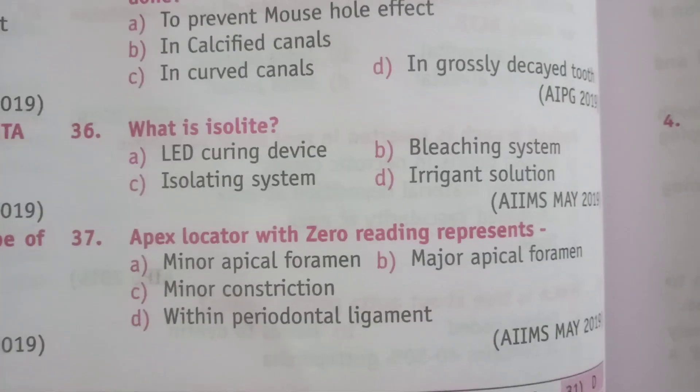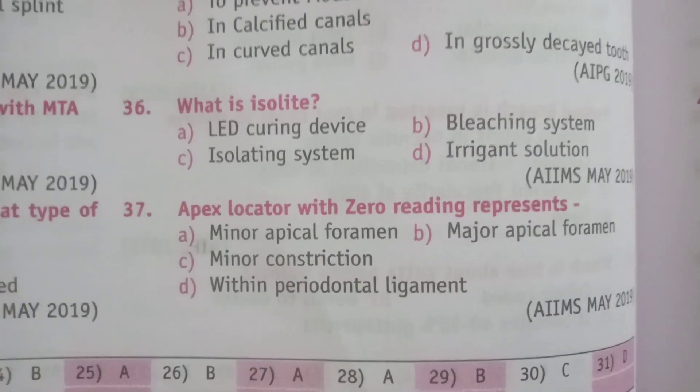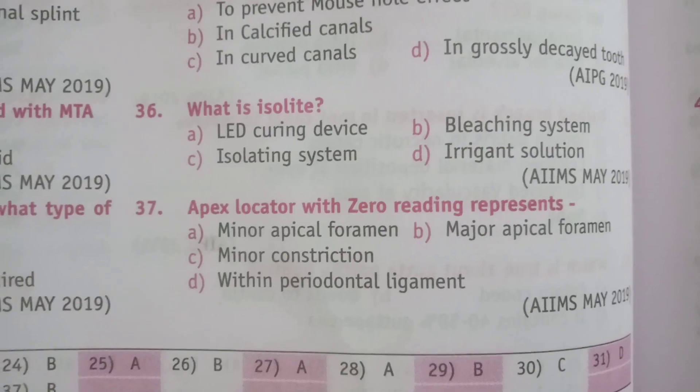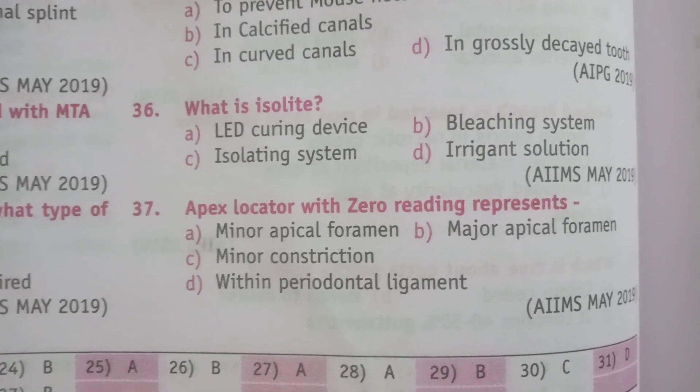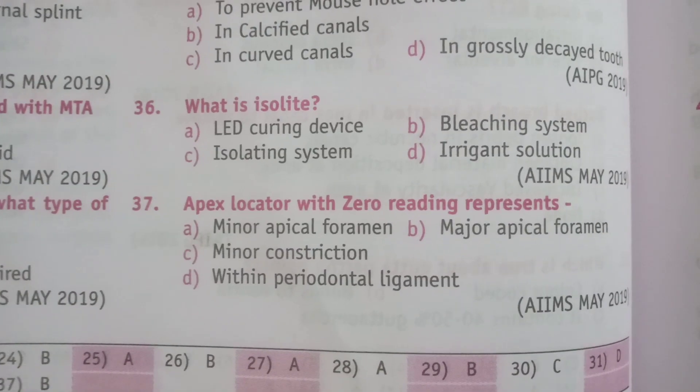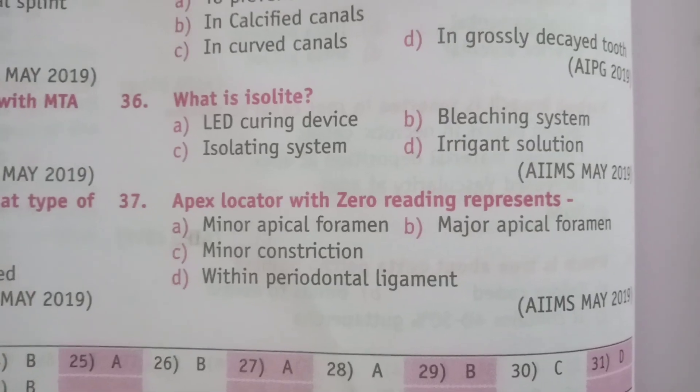The last question for today's discussion: apex locator with zero reading represents the major apical foramen — this statement is untrue.